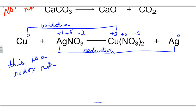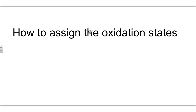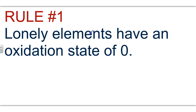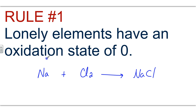Now let's look at the rules for assigning oxidation states. Rule one: when you have a lone element, it gets an oxidation state of zero. For example, in sodium plus chlorine yields sodium chloride, sodium alone is neutral and chlorine alone — even as a diatomic — is neutral. But in sodium chloride they are bonded as an ionic compound, so they do not get a charge of zero.